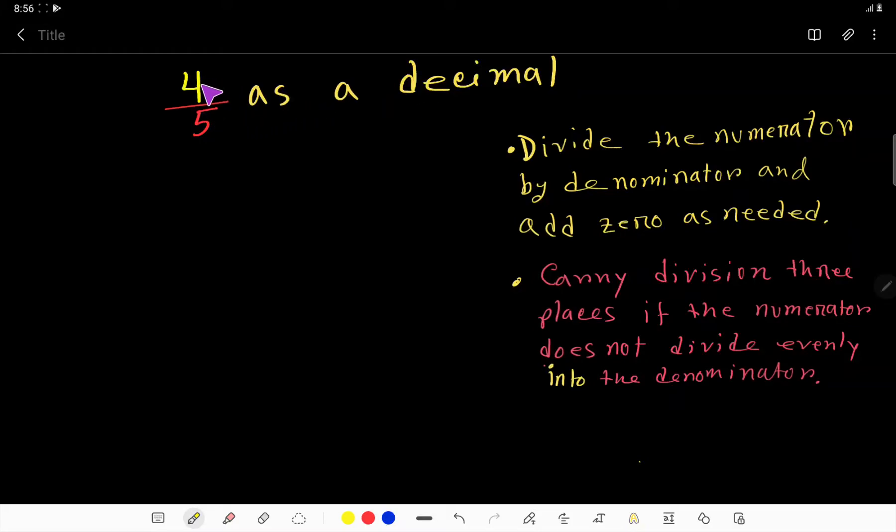Welcome to this channel. 4 by 5 as a decimal. To convert this fraction as a decimal, we have to divide this numerator 4 by the denominator 5, so we'll apply long division method. 4 is smaller than 5.